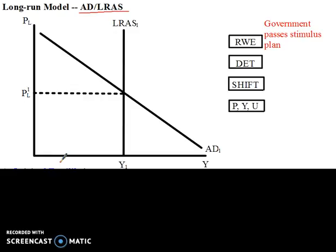So what do we do with this? We go back and look at our determinants — the aggregate demand determinants and the long-run aggregate supply determinants — and try to decide which determinant has changed and which curve will shift. The determinant here is a change in government spending. If the government passes a stimulus plan, government spending has increased, which is on the aggregate demand side, so the aggregate demand curve is going to shift to the right.